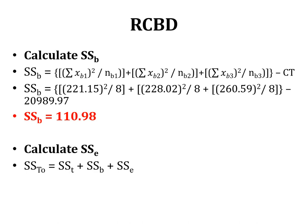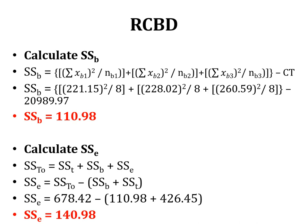Now we calculate SS error. Since SS total = SS treatment + SS blocks + SS error, we rearrange: SS error = SS total − SS treatment − SS blocks. So SS error = 678.42 − 426.45 − 110.98 = 140.98. This gives us all four sums of squares, and next we calculate their degrees of freedom.